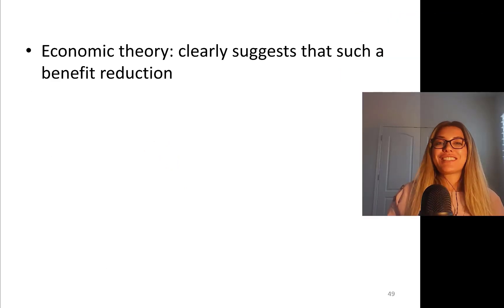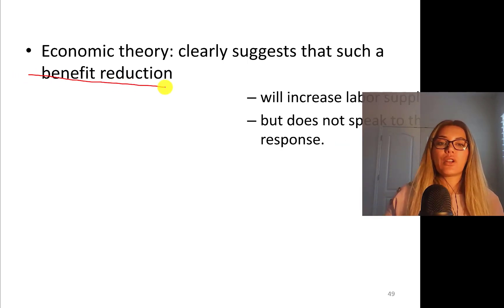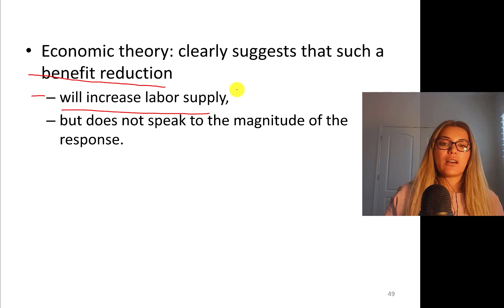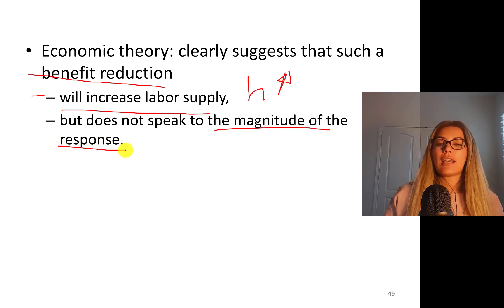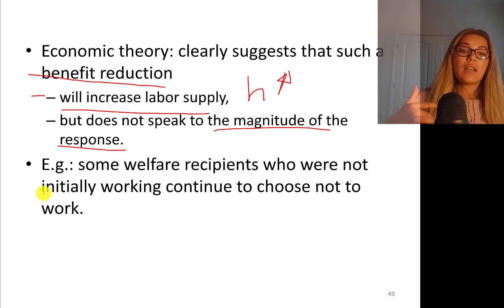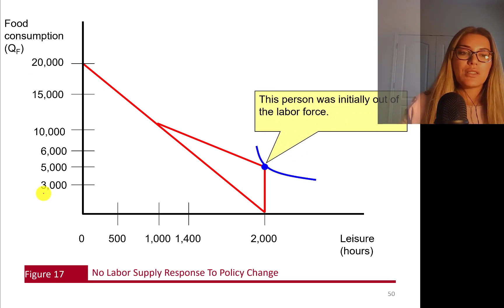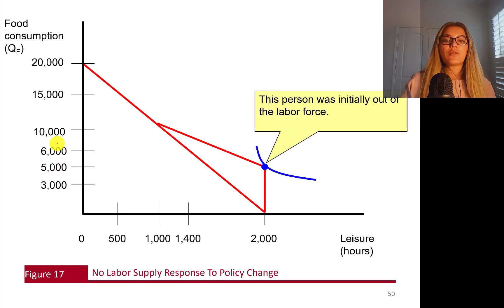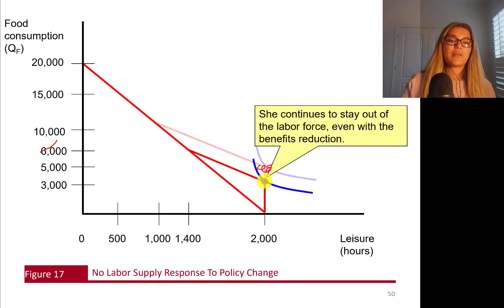Economic theory clearly suggests that such a benefit reduction will cause increased hours of work — labor supply will increase and hours will go up. But we don't know about the magnitude of the response. Some welfare recipients who are not initially working can actually continue not to work. Imagine a person who was initially out of the labor force at the corner solution — she can still stay out of the labor market, collect $3,000, and continue to stay out even with the benefits reduction.